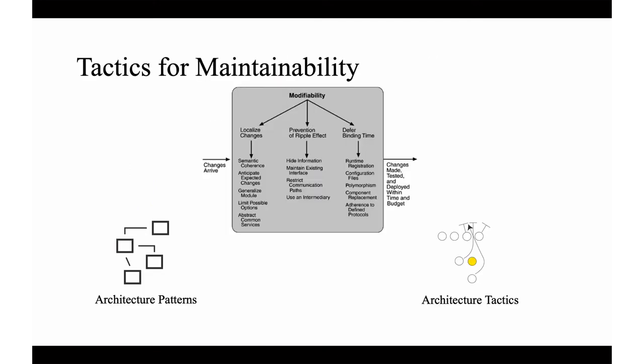If you look at tactics for maintainability, remember that tactics are more like strategies to choose certain qualities. Sometimes a pattern can be part of a strategy or a complete strategy. Tactics for maintainability: you see here on the left-hand side that changes arrive, and at the right-hand side the outbound arrow is changes made, tested, deployed within time and budget. That's the response of the system. But how do you achieve this? How do you get a system that can take care of these changes as they arrive, timely and within budget with the expected quality?